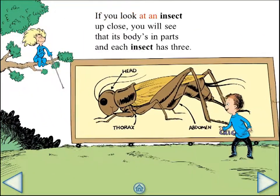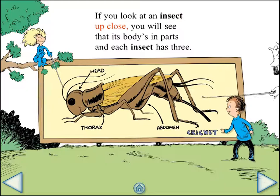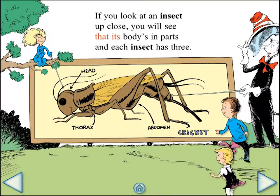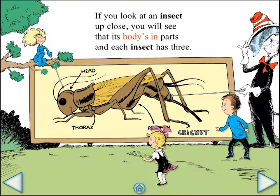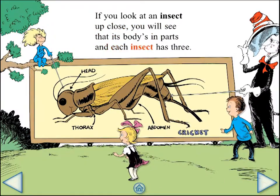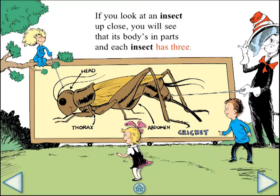If you look at an insect up close, you will see that its body is in parts, and each insect has three.